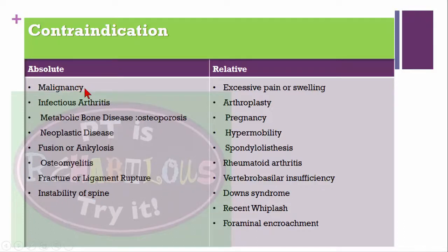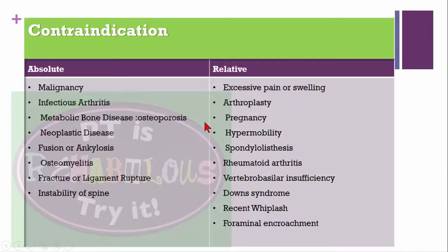Additional absolute contraindications include fracture, ligamentous rupture, and instability of the spine. In malignancy, osteoporosis, and ankylosis, giving mobilization may cause fracture. If a recent fracture or ligamentous rupture is present, we cannot give spinal mobilization. Relative contraindications include excessive pain or swelling, arthroplasty, pregnancy, hypermobility, and spondylolisthesis.